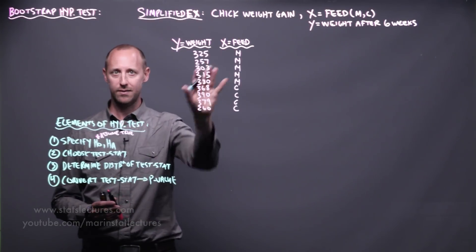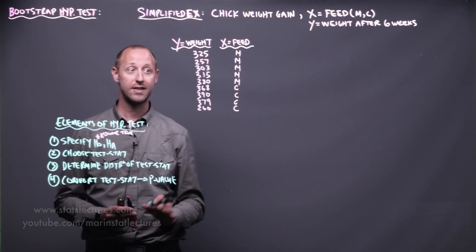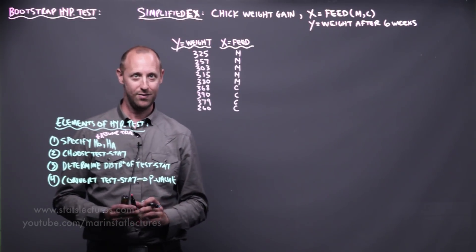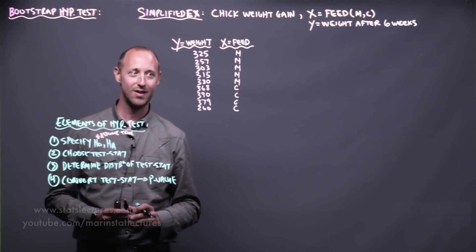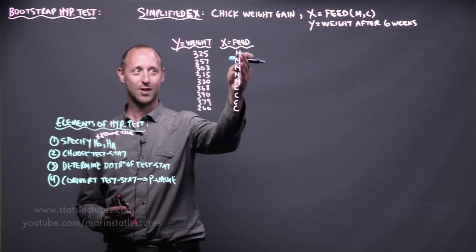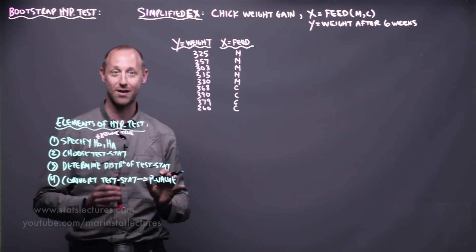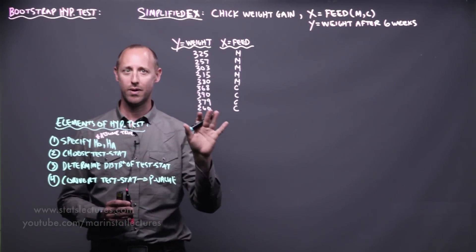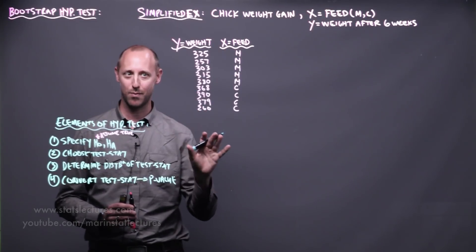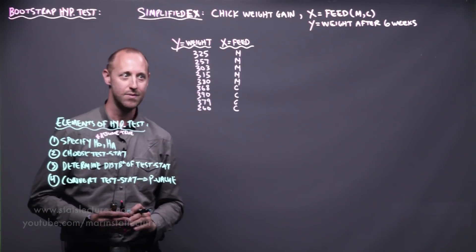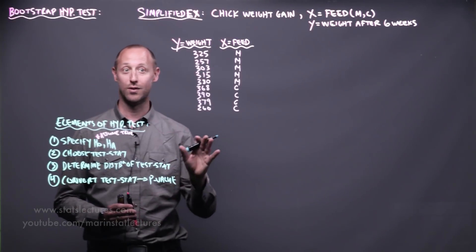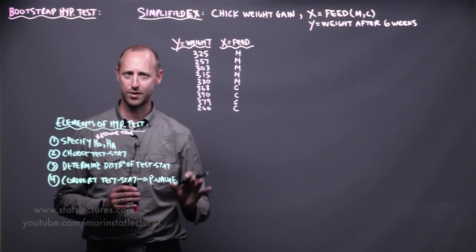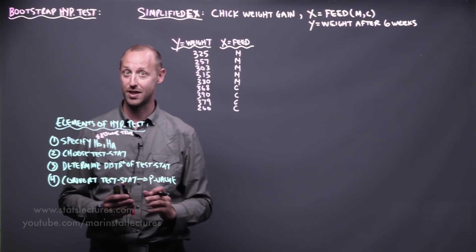We want to start with the question: do these two diets differ? The sarcastic answer is yes — one starts with M, one starts with C, they have different components. What I mean is that when we specify a question, we need to be more specific. Do the mean weight gains differ? Do the median weights differ? Something more specific than just a general statement.